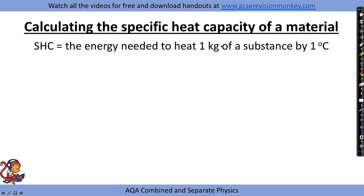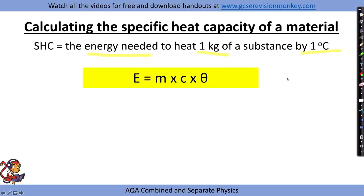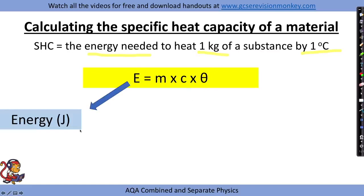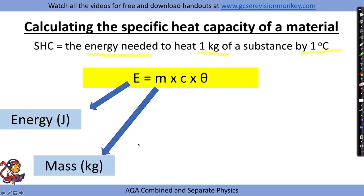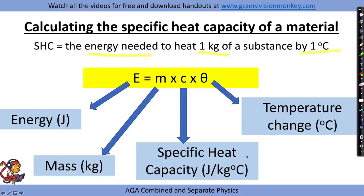In this practical you'll be calculating the specific heat capacity of a material. The specific heat capacity is the energy needed to heat one kilogram of a substance by one degree C. There is an equation to go with this practical which is given on your data sheet: E equals m times c times theta, where E is energy in joules, m is mass in kilograms, c is specific heat capacity in joules per kilogram degrees C, and theta is temperature change in degrees Celsius.